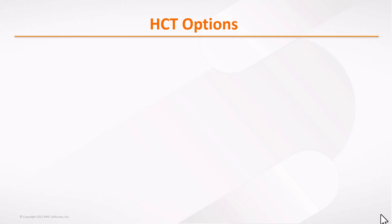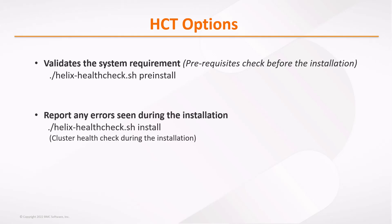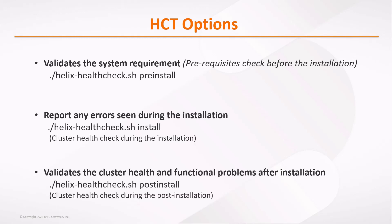HC2 has three options. The first is pre-install, which validates system requirements and performs prerequisite checks before the actual installation starts. The second is install — if during installation you find it has hung or is reporting errors, you can run this option and it will report any errors occurring during the installation. The third is post-install, which is a health check after successful installation to validate the health of your cluster and identify any functional problems with the products.